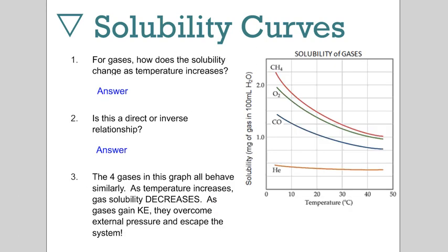Let's talk about gases. Gases behave differently than solutes that are solid in that as you increase temperature, you see solubility go down. How does solubility compare to temperature? As temperature increases, solubility decreases. Is this direct or inverse relationship? Since as you increase temperature solubility decreases, you call it an inverse relationship. The four gases in the graph all behave similarly as temperature increases - gas solubility decreases.